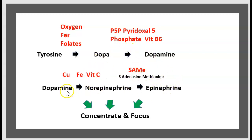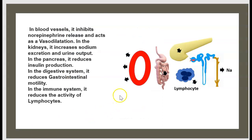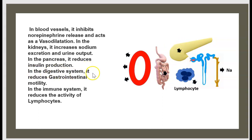As a result, dopamine, norepinephrine, and epinephrine lead to concentration and focus. But dopamine outside of the brain — in blood vessels, it inhibits norepinephrine release and acts as a vasodilator. In the kidney, it increases sodium excretion. In the pancreas, it reduces insulin production. In the digestive system, it reduces gastrointestinal motility. In the immune system, it reduces the activity of lymphocytes.